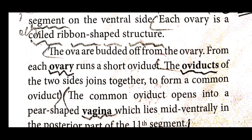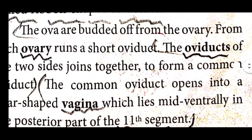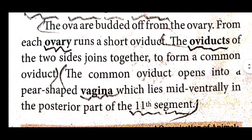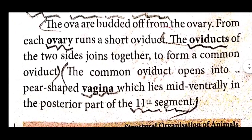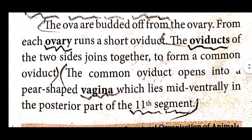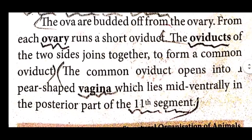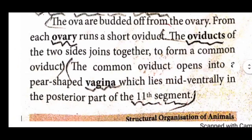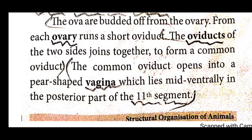From each ovary runs a short oviduct. The oviducts of the two sides join together to form a common oviduct. The common oviduct opens into a pear-shaped vagina, which opens ventrally in the posterior part of the segment.